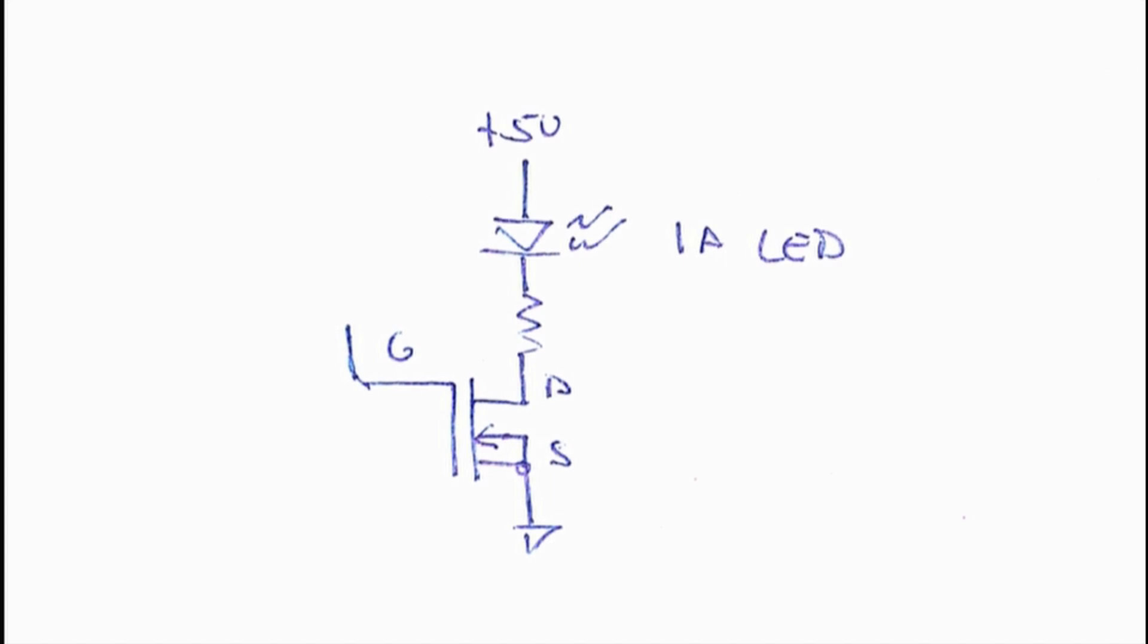Not much. There's some leakage current, but it's in the very tiny amounts. Nothing. When it's on, how much power is dissipated? One amp squared times 20 milliohms. Well, that's 20 milliwatts. And actually, 20 milliwatts is a maximum.